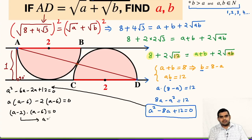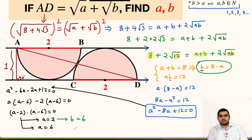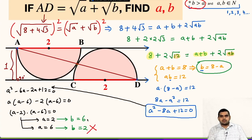From the quadratic, either A = 2 or A = 6. If A = 2, then B = 8 − 2 = 6. If A = 6, then B = 8 − 6 = 2. But according to the question, B is greater than A, so we cannot accept the second case. Therefore, our final answer is A = 2 and B = 6.